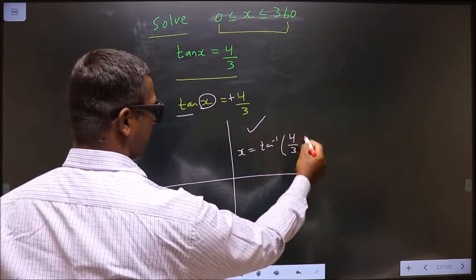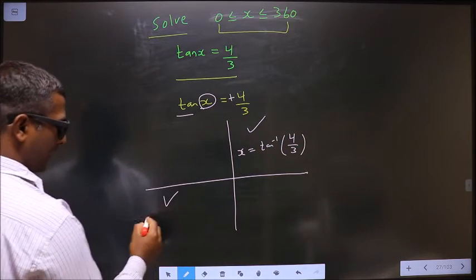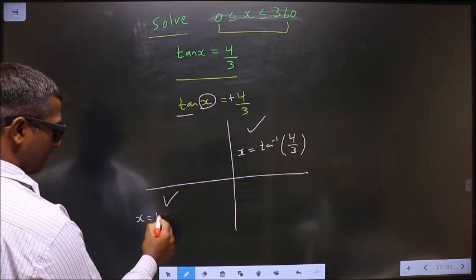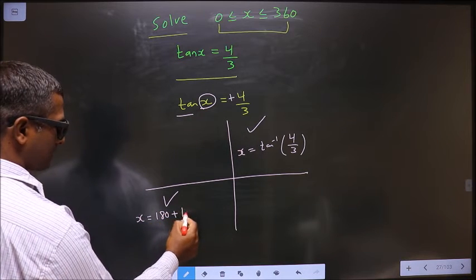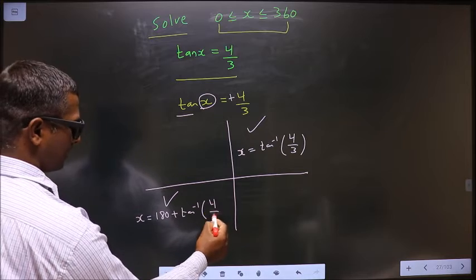To get an angle in the third quadrant, we do 180 plus tan inverse 4/3.